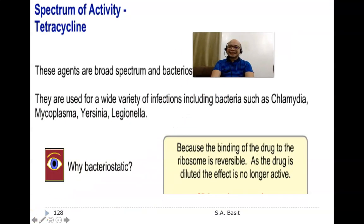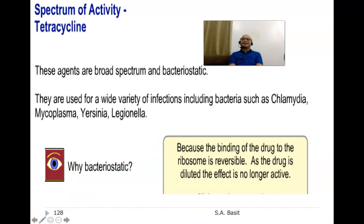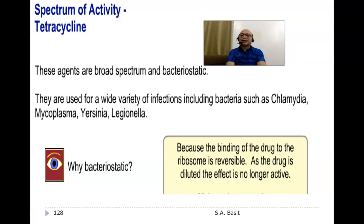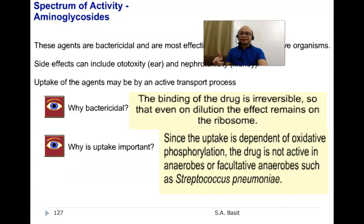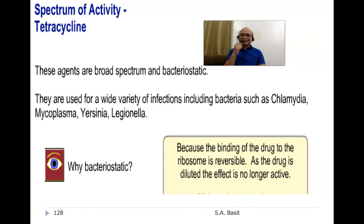Tetracyclines are broad-spectrum but bacteriostatic — they will not kill bacteria but simply retard or stop bacterial growth. They are used for a wide variety of infections including Chlamydia, Mycoplasma, Yersinia, and Shigella. They are bacteriostatic because the binding of the drug to the ribosome is reversible: as the drug is diluted, the effect is no longer active — unlike aminoglycosides, whose binding is irreversible.